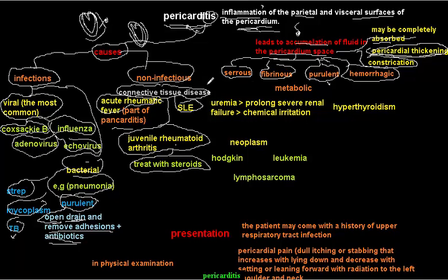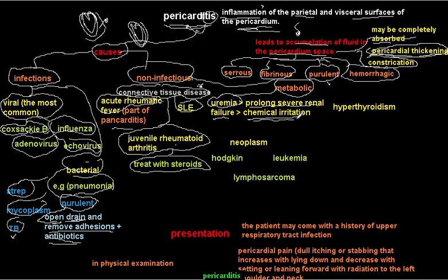The second non-infectious cause is metabolic disorders. Uremia — resulting from prolonged severe renal failure — causes chemical irritation of the pericardium, leading to pericarditis. Uremia is an important cause of pericarditis.